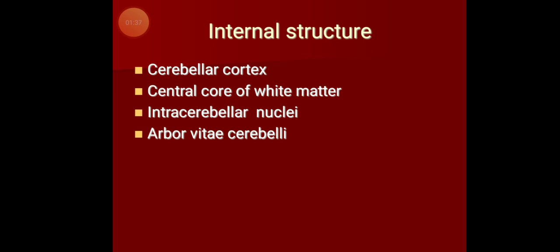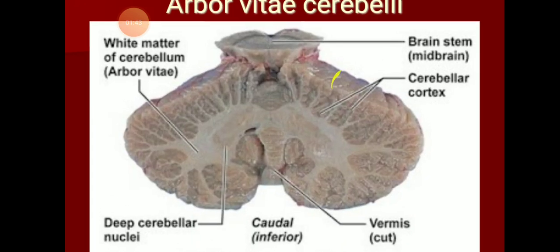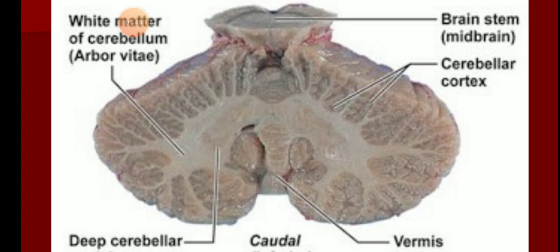Now concentrate on the diagram. You can see a large number of folia, each with an outer layer of gray matter. The white matter enters in a branching tree pattern — that is the arborvitae cerebelli. In the central core of white matter, you find large masses of gray matter, termed the intracerebellar nuclei.